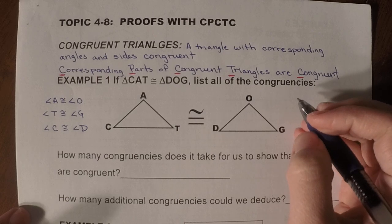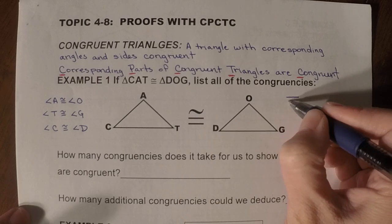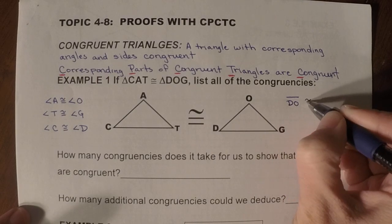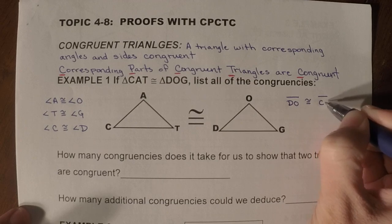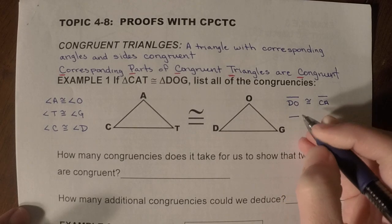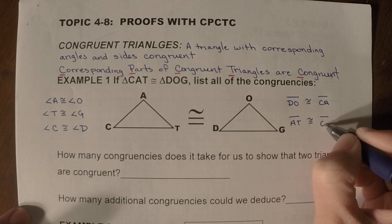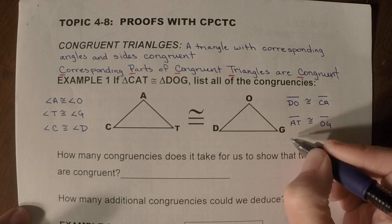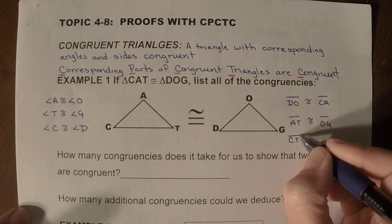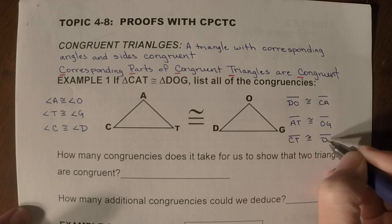For the sides, we have DO congruent to CA, AT congruent to OG, and CT congruent to DG.